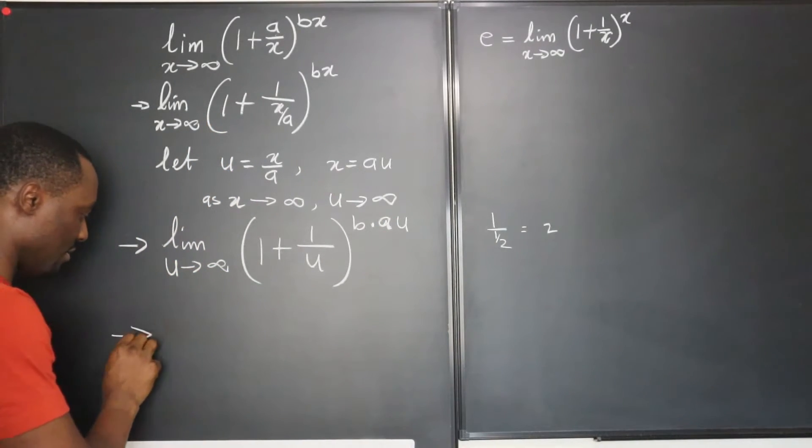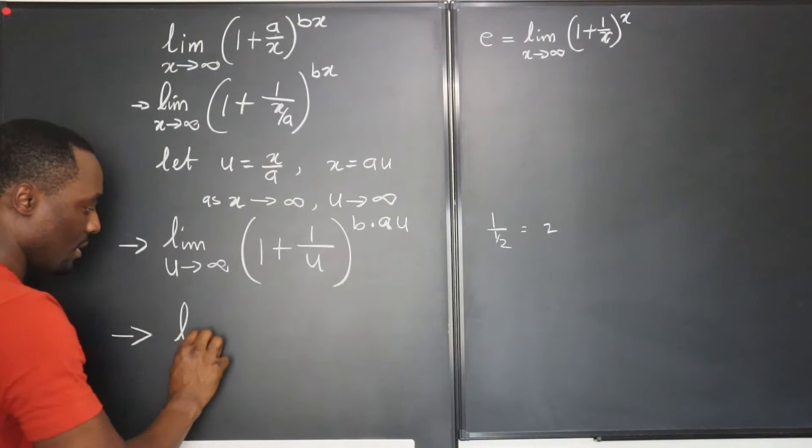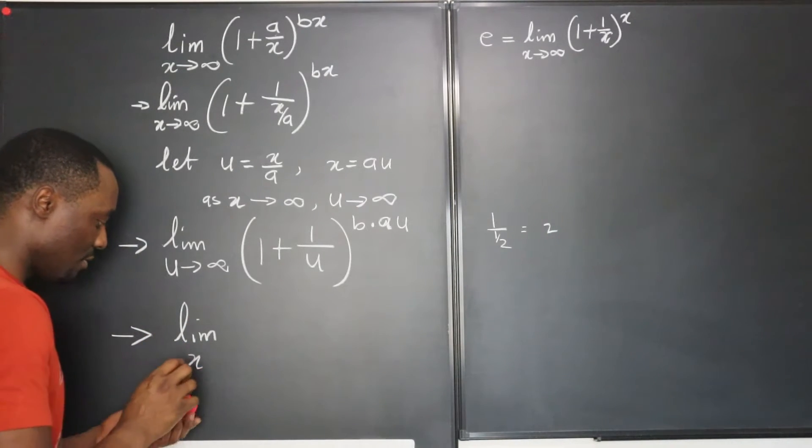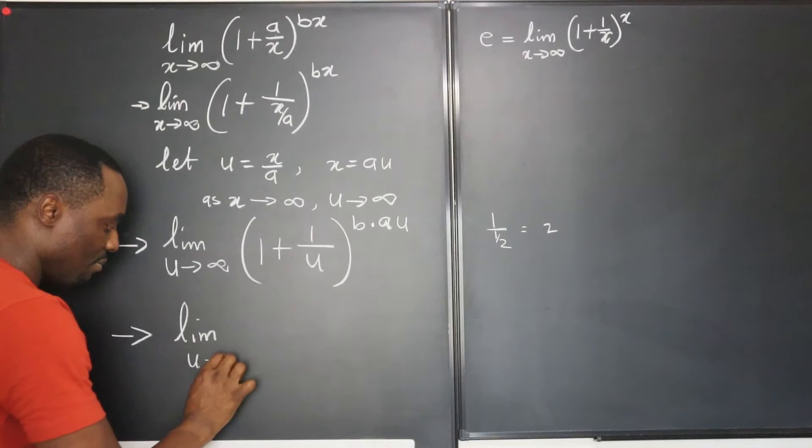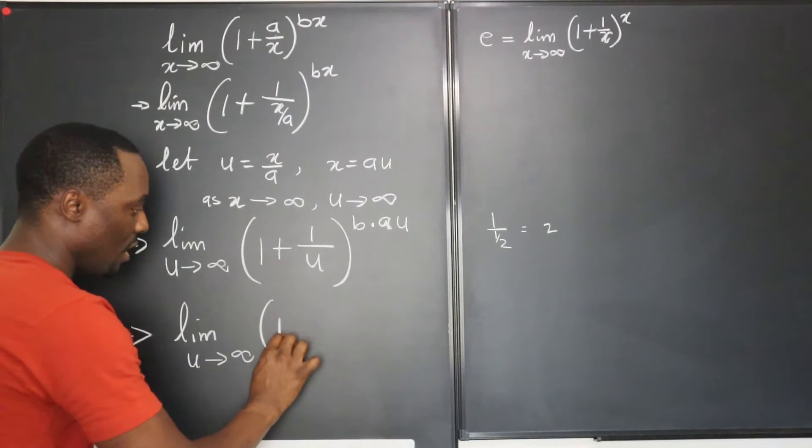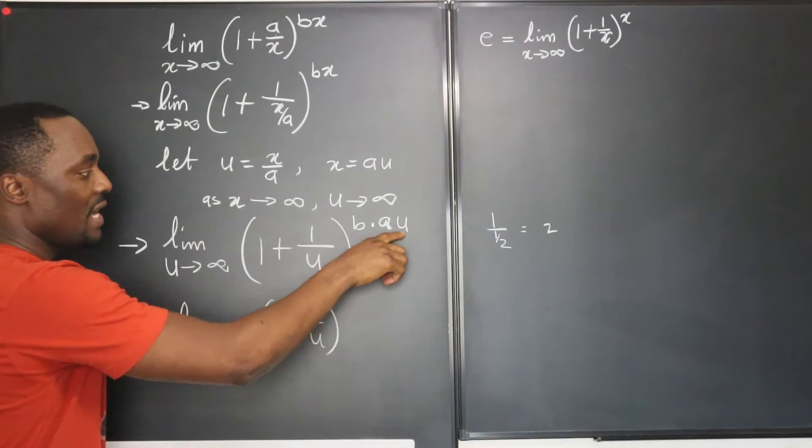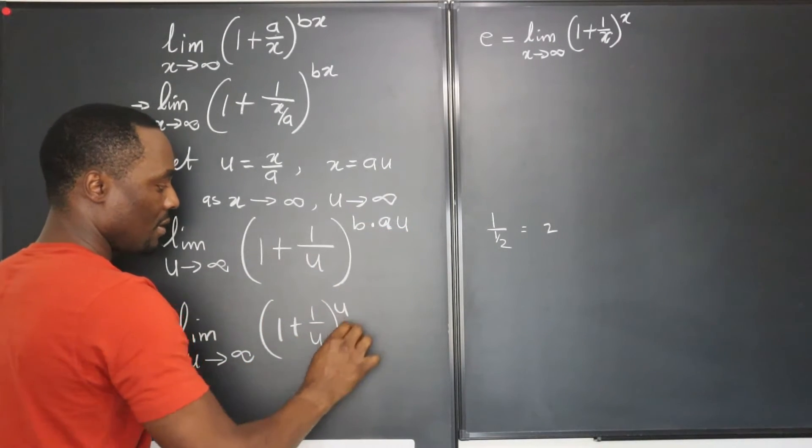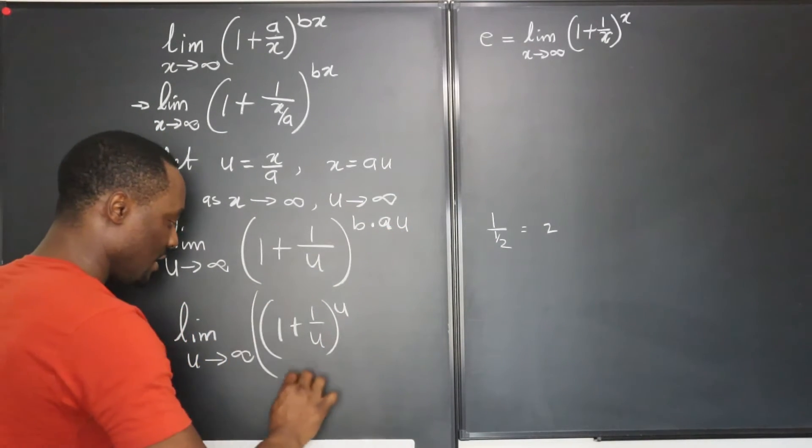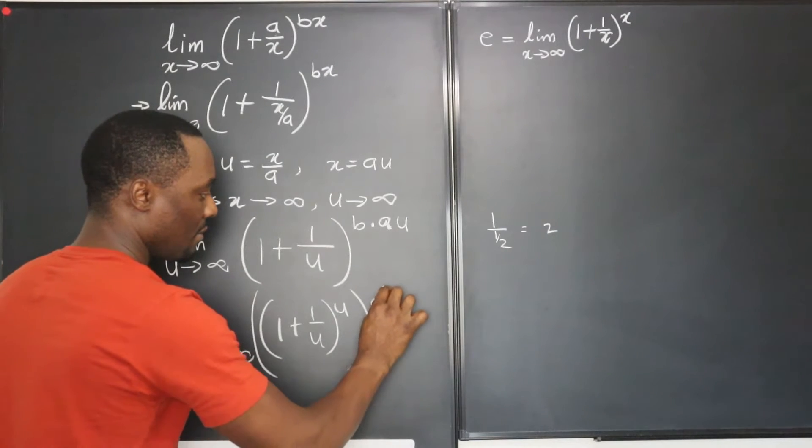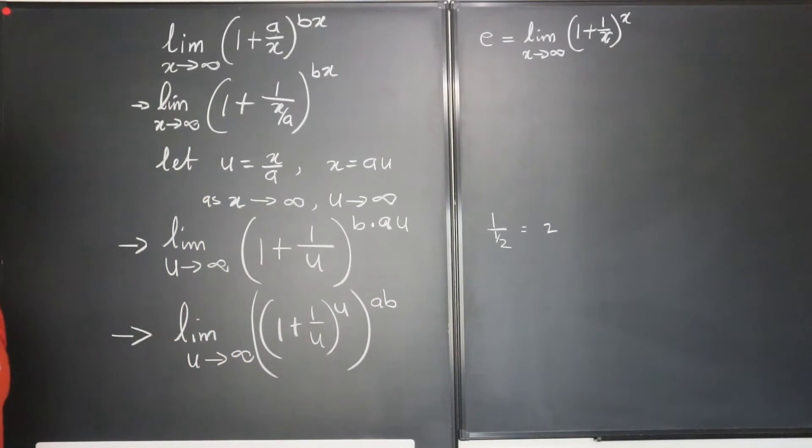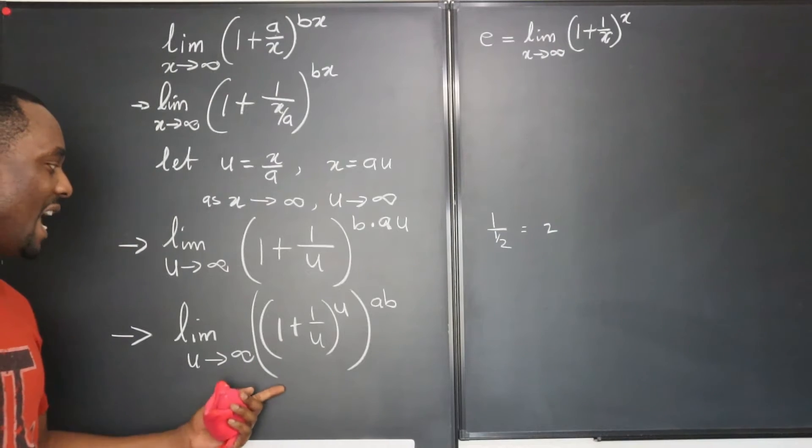So this expression will lead us to the limit as u approaches infinity of 1 plus 1 over u, raised to power. You see, we can put this u here. And then raise it to power ab. You raise that to power ab.